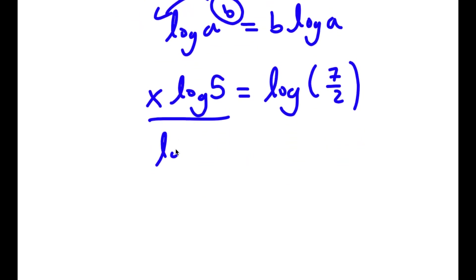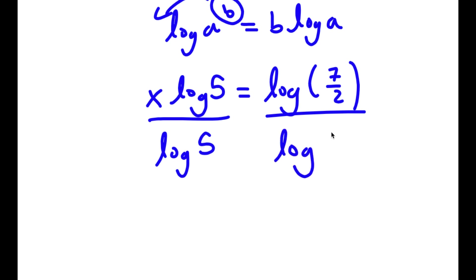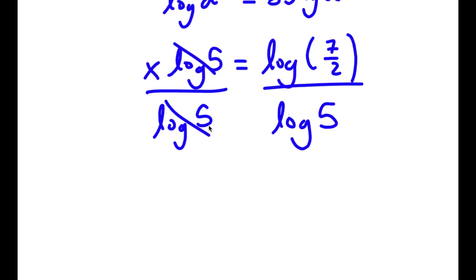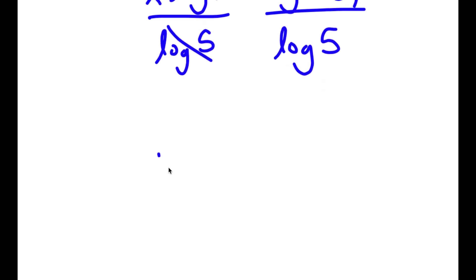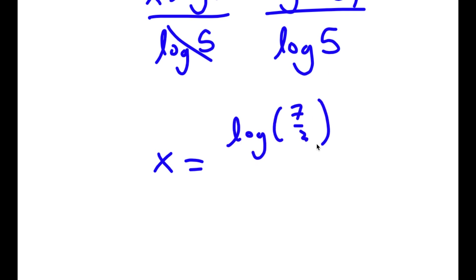Now if I divide both sides by log 5, these two cancel out and I get x is equal to log of 7 over 2 divided by log 5.